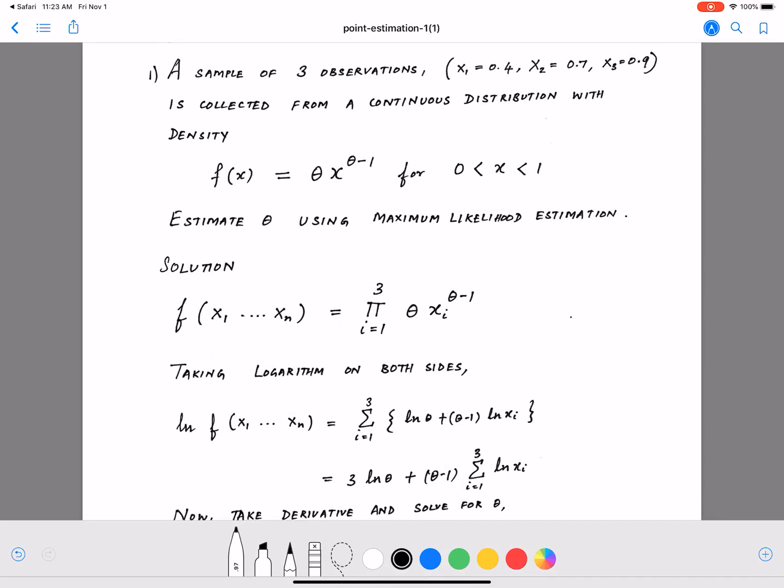Hello everyone, in this video we are going to look at a problem in point estimation. Consider a sample of three observations where x1 equals 0.4, x2 equals 0.7, and x3 equals 0.9. These observations are collected from a continuous distribution with density f(x) equals theta x raised to theta minus 1 for 0 less than x less than 1.